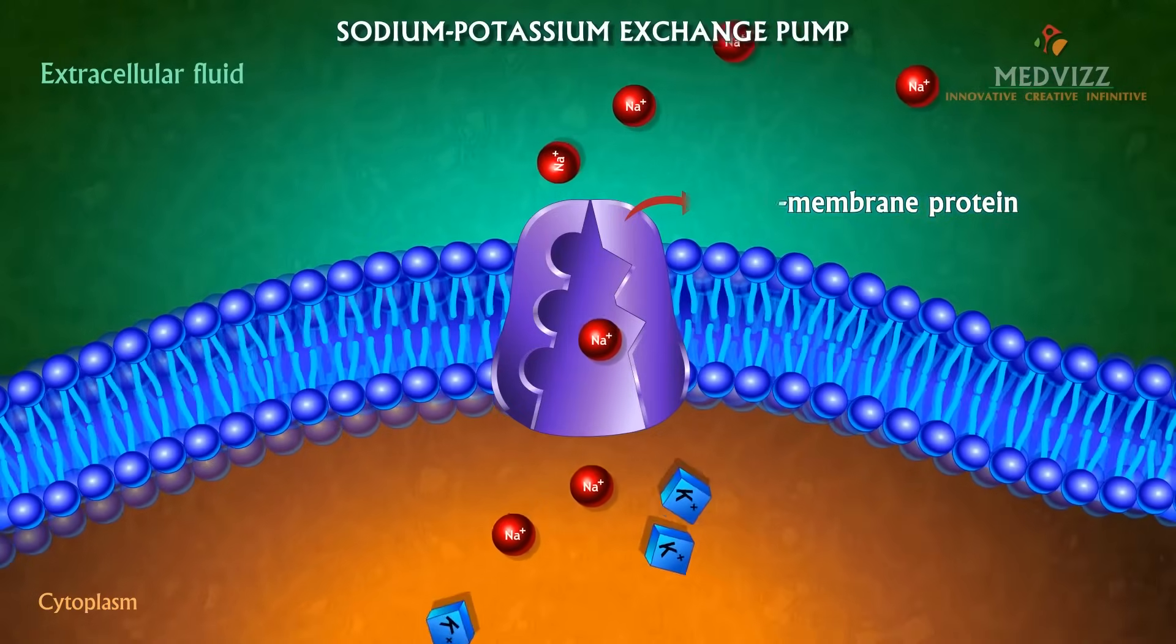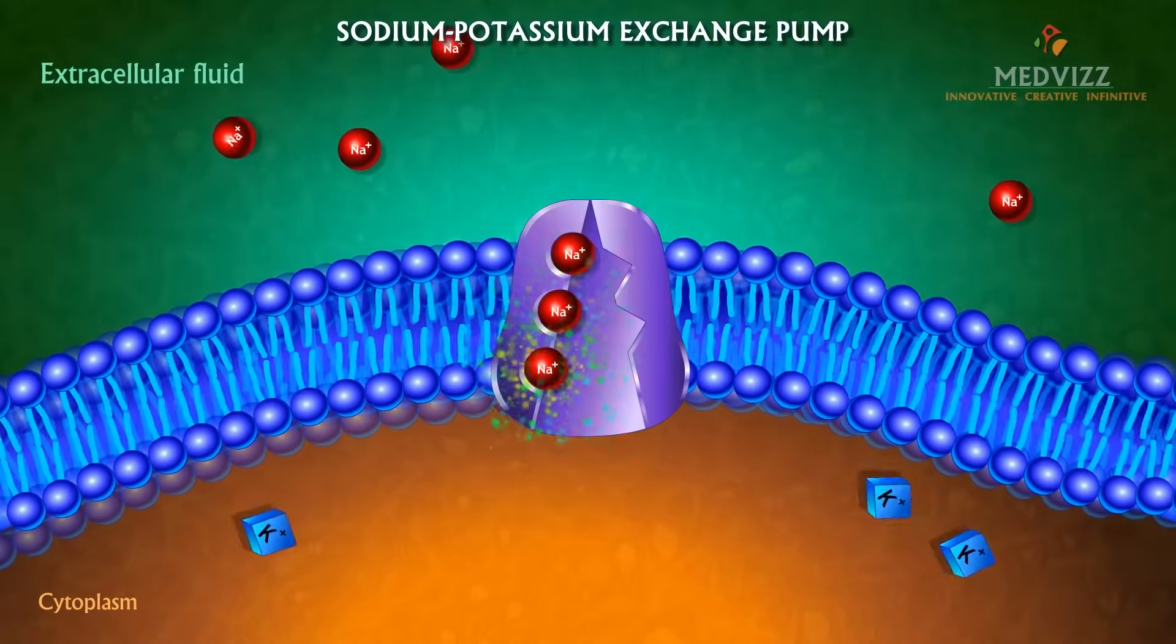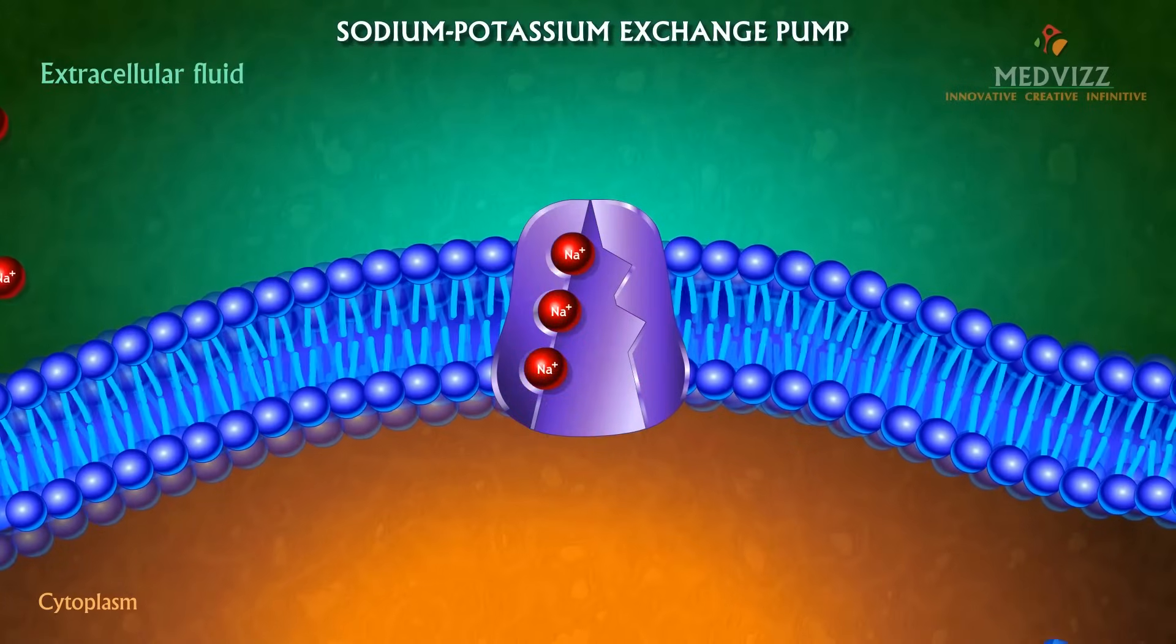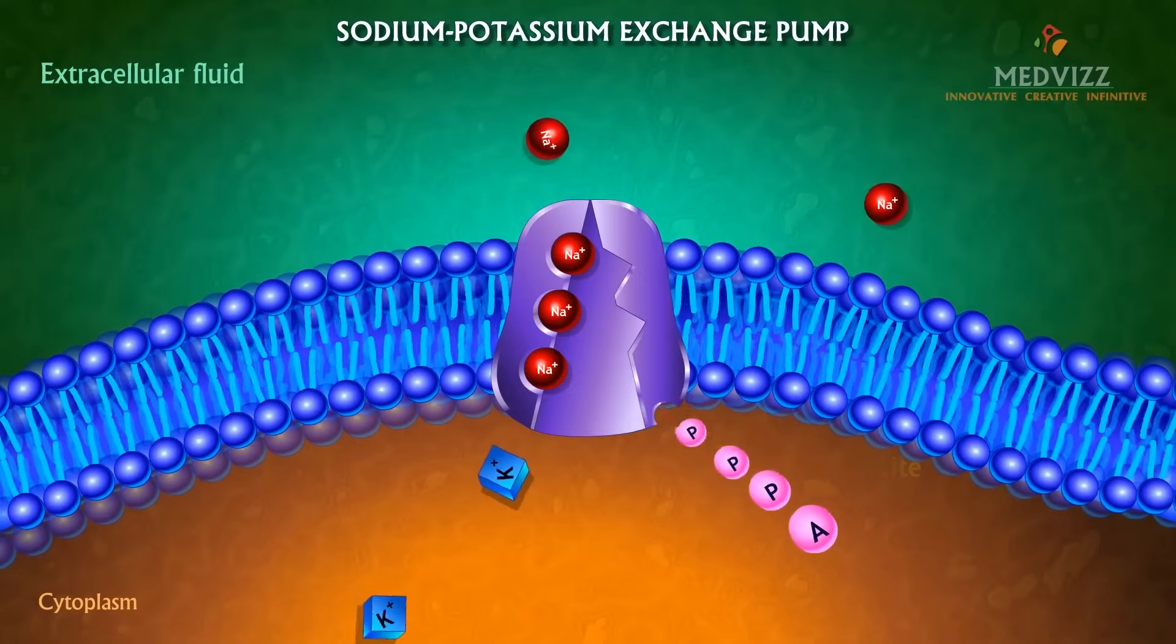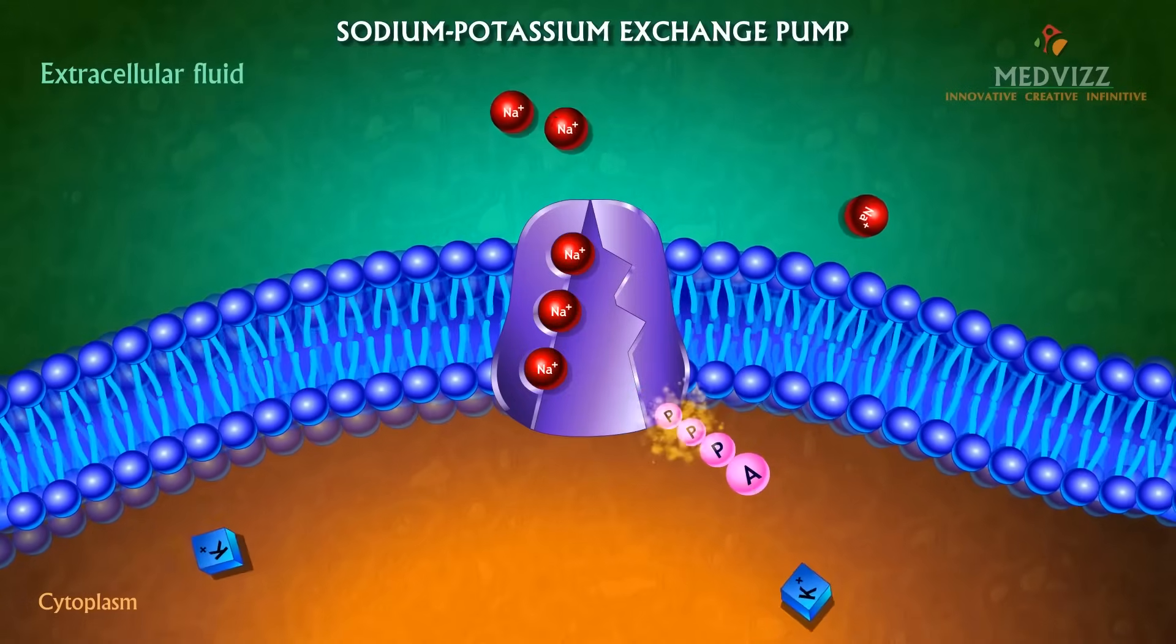Three sodium ions bind to the cytoplasmic side of the protein causing the protein to change its conformation. In its new conformation the molecule becomes phosphorylated at the expense of a molecule of ATP.